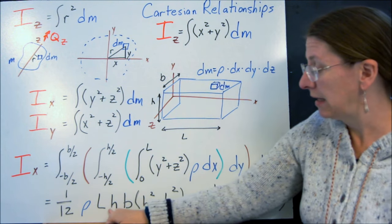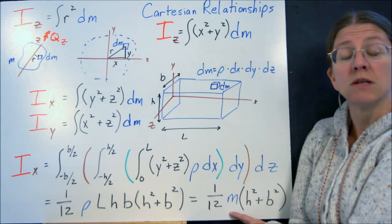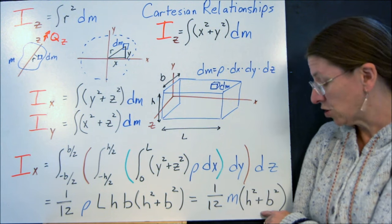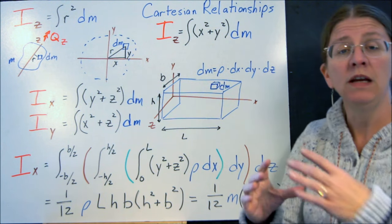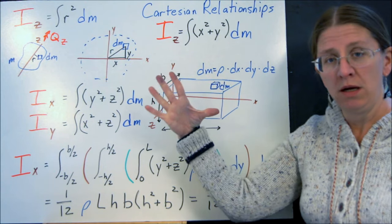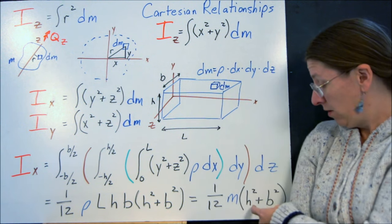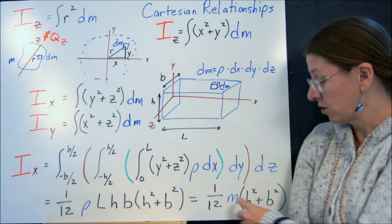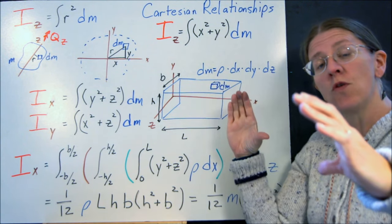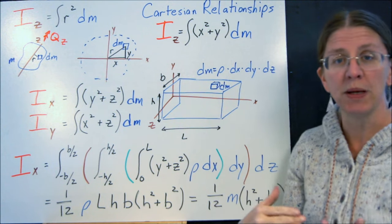Now if you look at this rho times Lhb, that's the mass of the entire rectangular prism. So what you will see is, if you look this up in a chart, you will see 1/12 m, the entire mass of your object, times h squared plus b squared. If you look at it at the end, what we're saying is, as h and b get bigger, the rotational inertia about the x-axis gets bigger with a cube. There's a square here, and then there's one more in here. So as the mass gets farther and farther from that axis, your rotation takes longer and longer to spin up to speed.